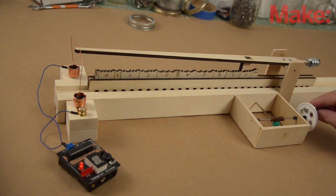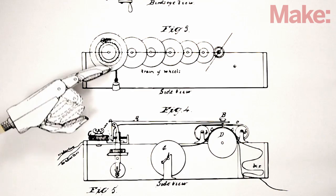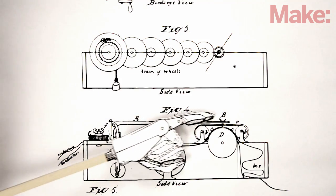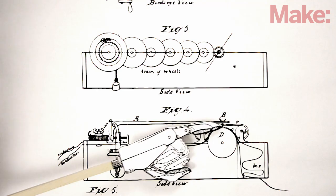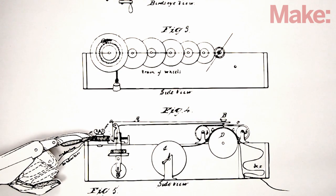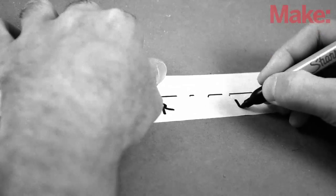But a Morse code transmitter is useless without a receiver, so Morse created one of those, too. A weight powers a clockwork mechanism that moves a paper tape. A spring-loaded lever holds a pin over the paper. And an electromagnet moves the lever, pushing the pin to the paper and converting electrical dots and dashes to real ones. The operator then manually converts them back into letters.